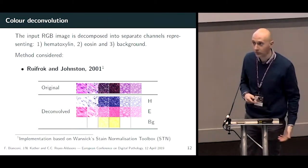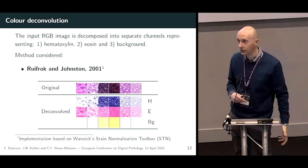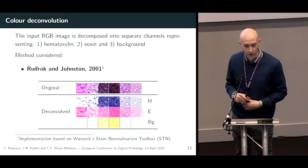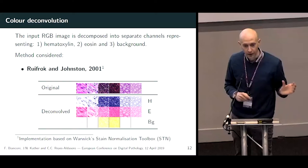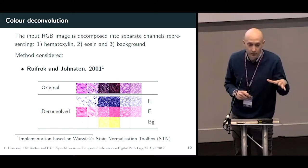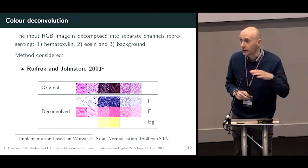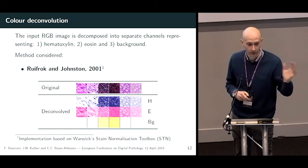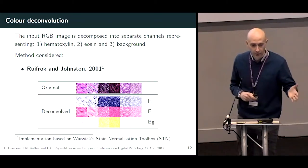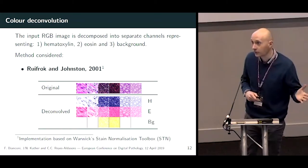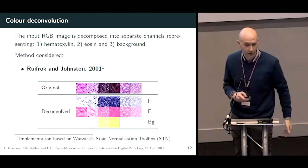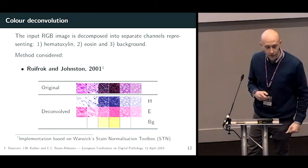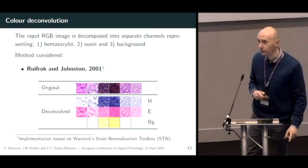Starting with color deconvolution: this is about taking an input image in RGB format and decomposing it into three different channels, each one representing the amount of hematoxylin and background. In our study we used the Ruifrok and Johnston method.